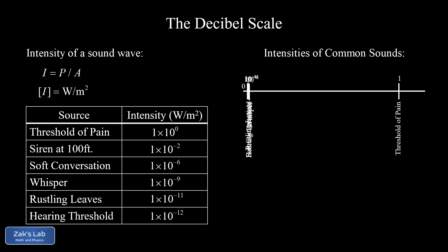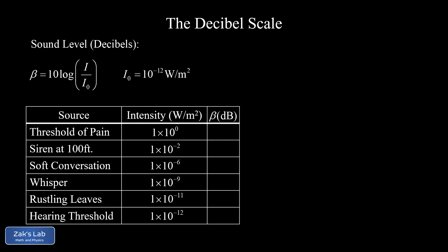This is where logarithms come in. One of the main uses of logarithms is to condense data into a smaller space when it ranges over a large number of orders of magnitude. For sound, that's the decibel scale. The sound level in decibels is defined as β = 10 × log(I / I₀), where I is the intensity of the sound being studied and I₀ is the threshold of hearing at 10 to the negative 12 watts per square meter.